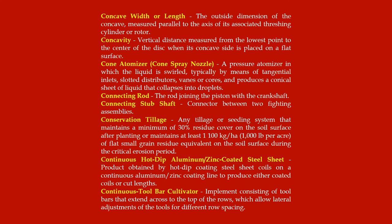Connecting rod: the rod joining the piston with the crankshaft. Connecting stub shaft: connector between two fighting assemblies. Conservation tillage: any tillage or seating system that maintains a minimum of 30% residue cover on the soil surface after planting, or maintains at least 1,100 kg per hectare or 1,000 pounds per acre of flat small grain residue equivalent on the soil surface during the critical erosion period.